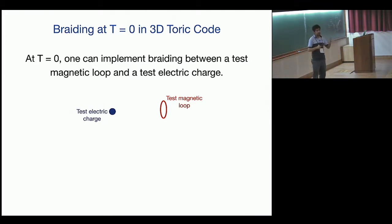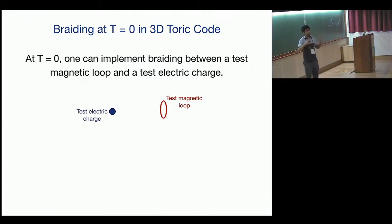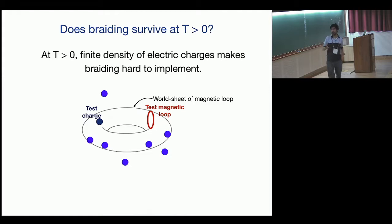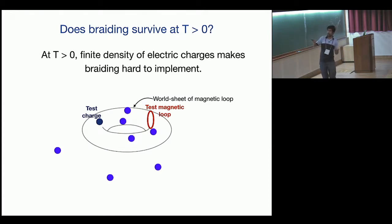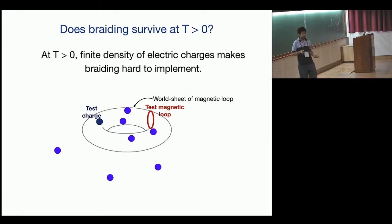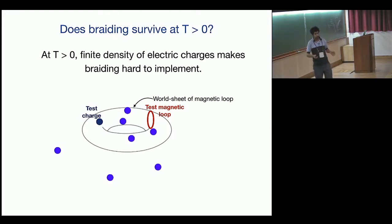At non-zero temperature, by which I mean the Gibbs state e^{-βH} (really coupling to a heat bath so the system is described by a mixed state), it's hard to define braiding. At finite temperature you have a finite density of anyons moving around, so while the loop is doing its trajectory it picks up extra phases from moving charges. This phenomenon is called quasi-particle poisoning, which is what people try to avoid in topological quantum computing—it always exists at non-zero temperature and limits qubit lifetime.